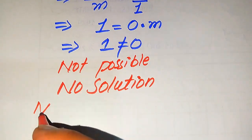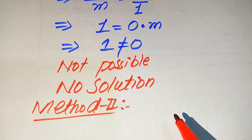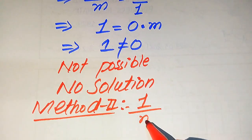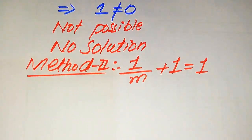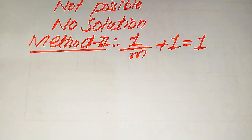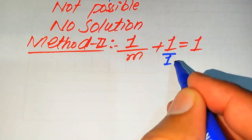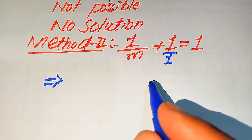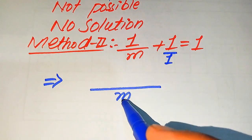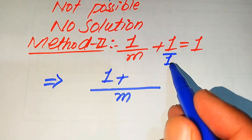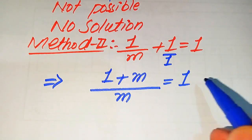Now we solve the same question using the second method. The given statement is: 1 divided by m plus 1 equals 1. In this method, we take the LCM of the terms. The LCM is m. Dividing m by m gives 1, and dividing m by 1 gives m, so we get 1 plus m over m equals 1.